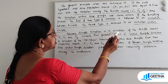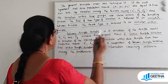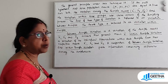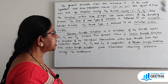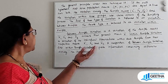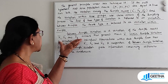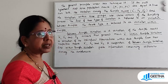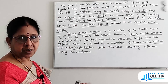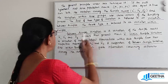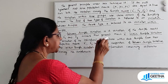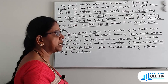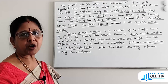Between Samples Variation is the variation of the sample means x̄₁, x̄₂, and x̄₃ around the general mean x̄. Within Sample Variation is the variation of the individual observations within each sample from their respective means x̄₁, x̄₂, and x̄₃.